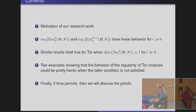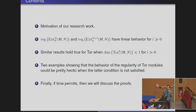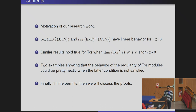Here are the contents. First, I will give the motivation of our research work, and then we will see that over graded complete intersection rings, the regularity of Ext modules asymptotically has nice behavior, in the sense that both functions are asymptotically given by a polynomial of degree 1. A similar result holds true for Tor when we have the additional condition that the dimension of the i-th Tor is at most 1 for sufficiently large i. But if we remove this condition, then this behavior can be far from being linear. And if time permits, we will discuss the proofs.